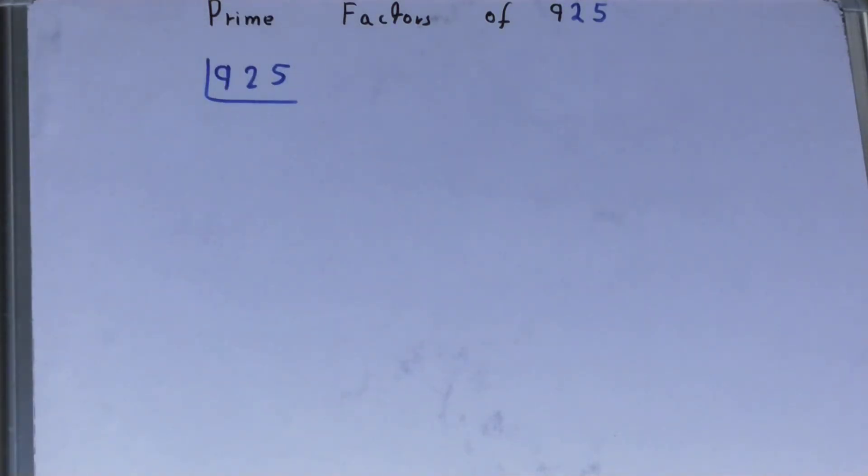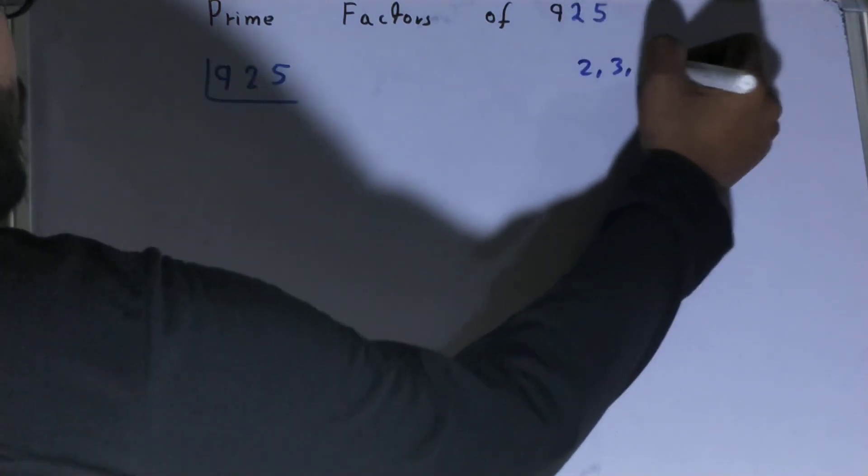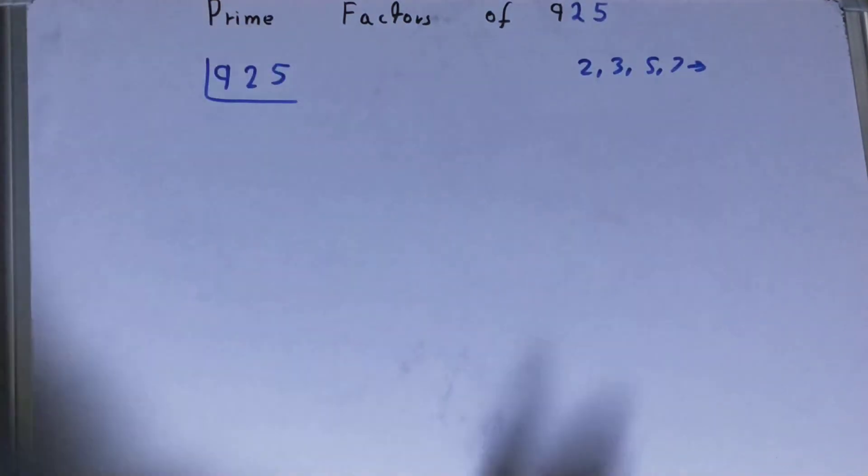...this any further, you must know what prime numbers are. Prime numbers are numbers that are divisible by 1 and the number itself, like 2, 3, 5, 7, and so on. We'll be starting with...